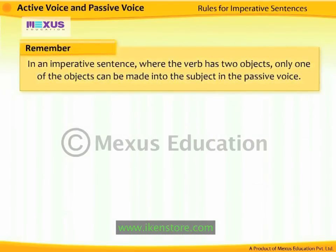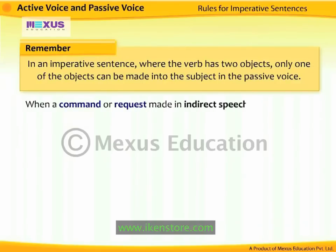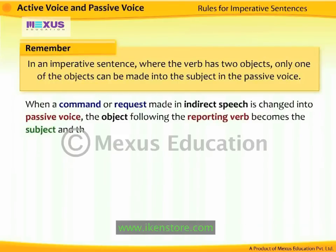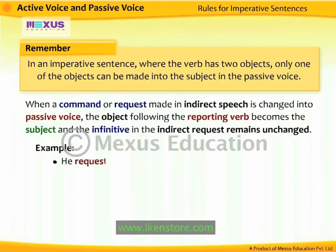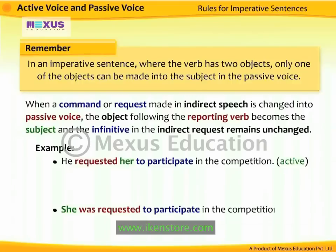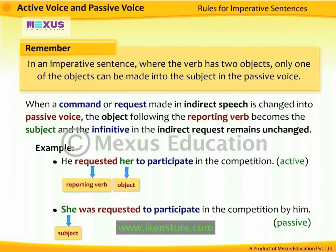In an imperative sentence where the verb has two objects, only one of the objects can be made into the subject in the passive voice. When a command or request made in indirect speech is changed into passive voice, the object following the reporting verb becomes the subject, and the infinitive in the indirect request remains unchanged. For example, 'He requested her to participate in the competition' becomes 'She was requested to participate in the competition by him.' The object 'her' becomes the subject, and the infinitive 'to participate' remains unchanged.